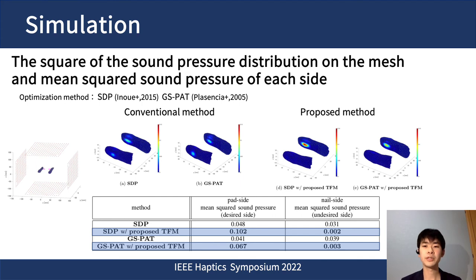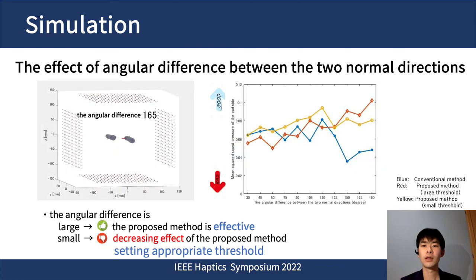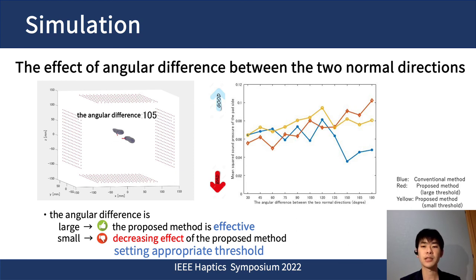We performed numerical simulations. In the case of pinching the object as mentioned earlier, the pressure on the desired surface was weak with the conventional method, and extra pressure was applied to the nail side. On the other hand, the pressure distribution on each surface was improved by the proposed method. Next, we changed the angular difference between the two normal directions. When the angular difference was large, the proposed method is effective. On the other hand, when it was small — in other words, when the normal directions are concentrated in one direction — the effect of the proposed method decreases. However, we can avoid negative effects by setting an appropriate threshold.